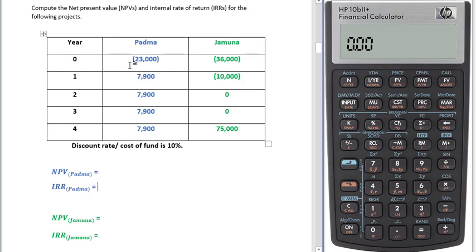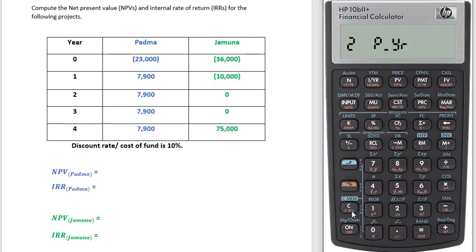Here you can see that we have only one investment, or negative cash flow, or cash outflow, at the beginning of period zero. Period zero means it's the beginning of the project. The first thing we have to ensure is that the calculator memory is clear.